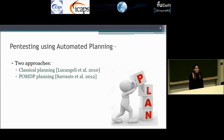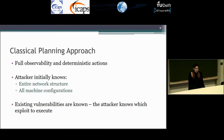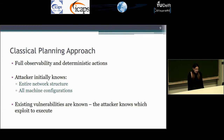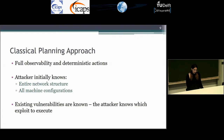So two approaches: model penetration testing using planning — model it as a classical problem and as a POMDP problem. The classical problem assumes that the attacker knows everything about the network: the network structure, each machine configuration, and each machine's vulnerabilities. In addition, the actions are deterministic, which means an exploit will fail or succeed and the attacker knows if the exploit will succeed beforehand.